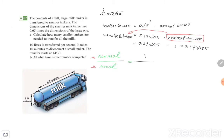So the smaller tanker is 0.274625. So 1 divided by 0.274625, that's your answer. And that will be approximately 3.6. So calculate how many smaller tankers are needed to transfer all the milk. If you need 3.6, then of course you need 4 smaller tankers to transfer all the milk.